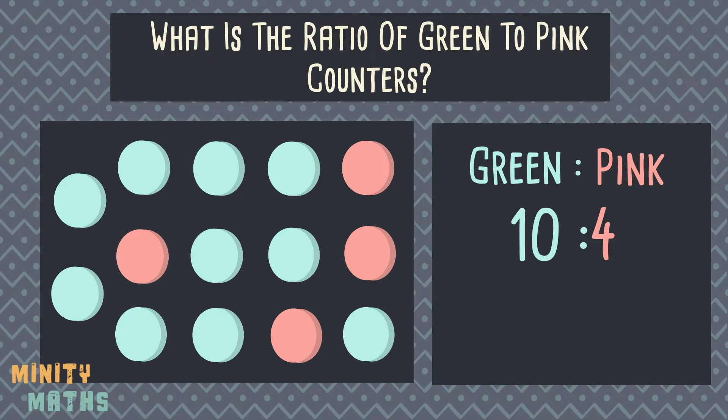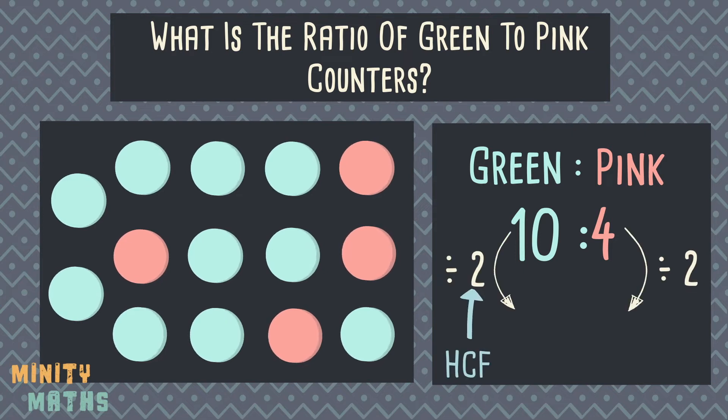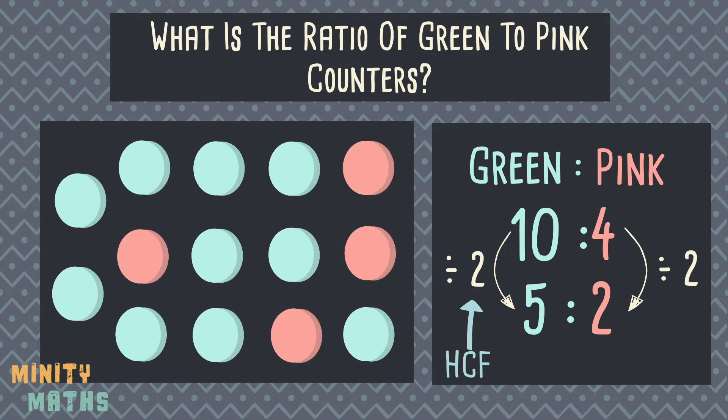To do this we have to divide each number in the ratio by the same factor, any factor that will divide into all numbers. Remember, we must do the same to every number in the ratio to keep the proportion correct. The easiest way to do this is to find the highest common factor of all numbers in the ratio, that is, the biggest number that will divide into all of the numbers without creating a decimal. So let's simplify this ratio using its highest common factor of 2. So for every 5 green counters, there are 2 pink counters.